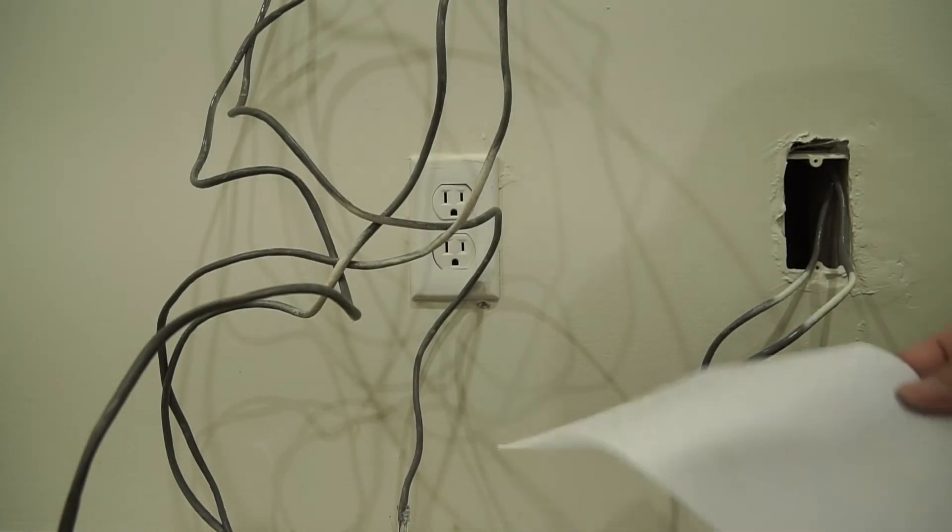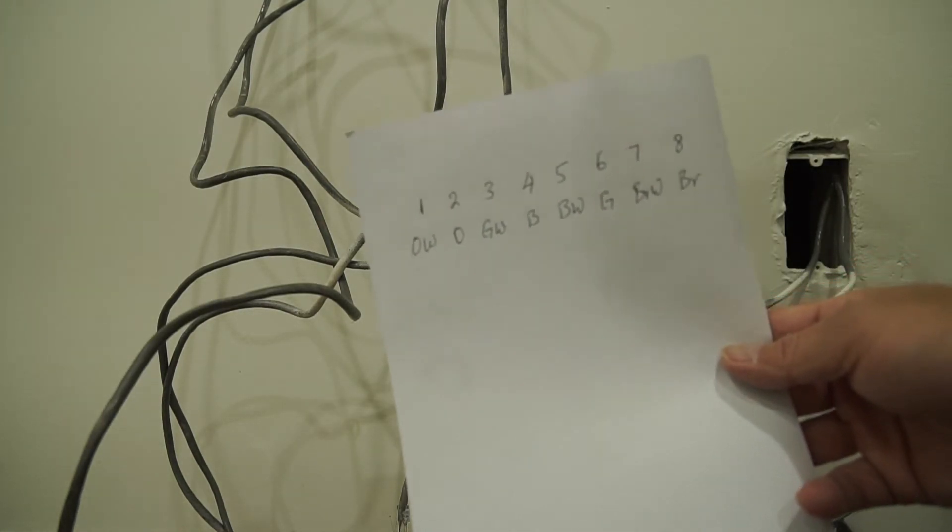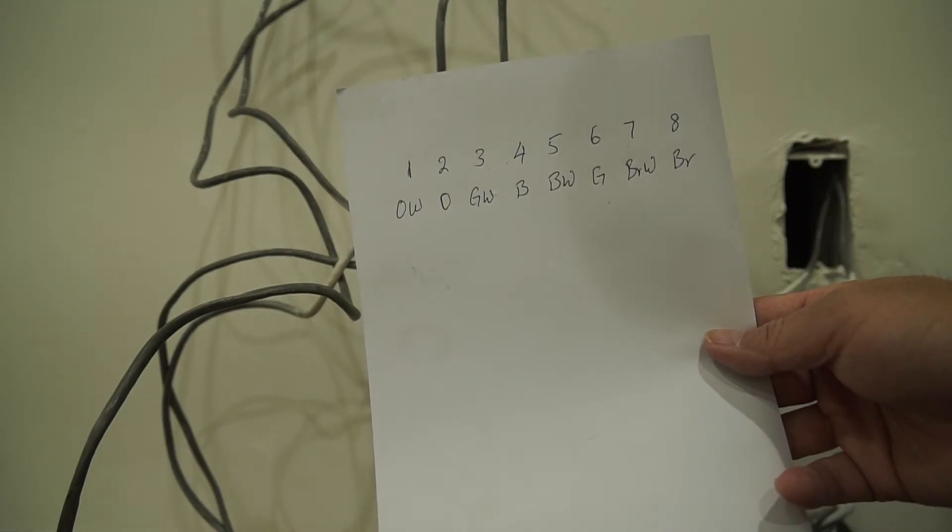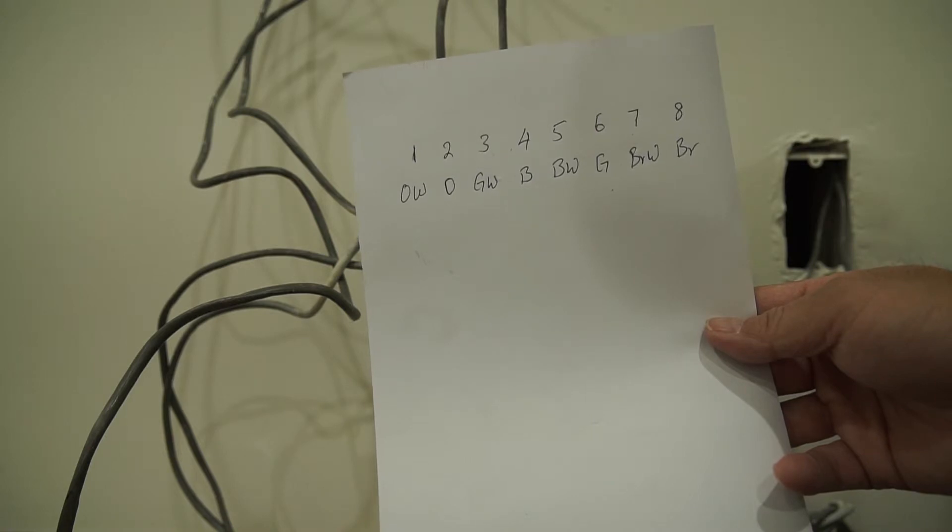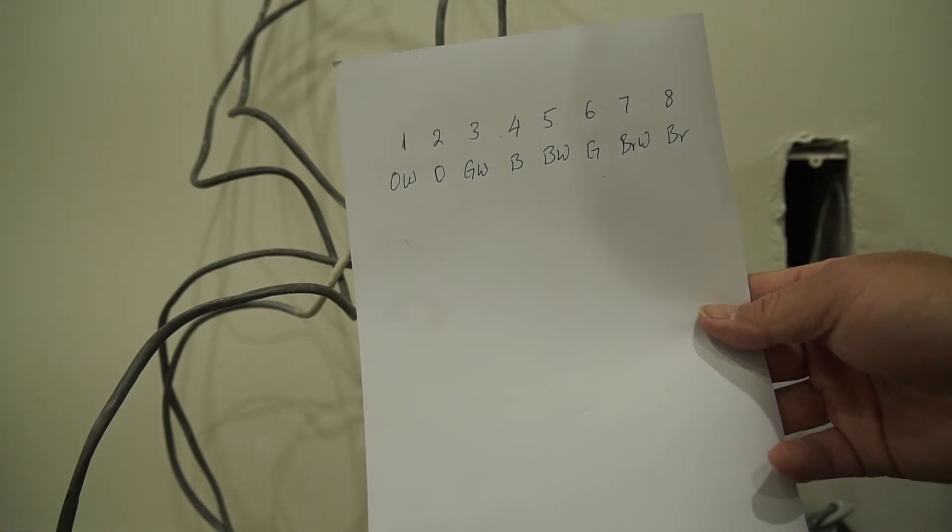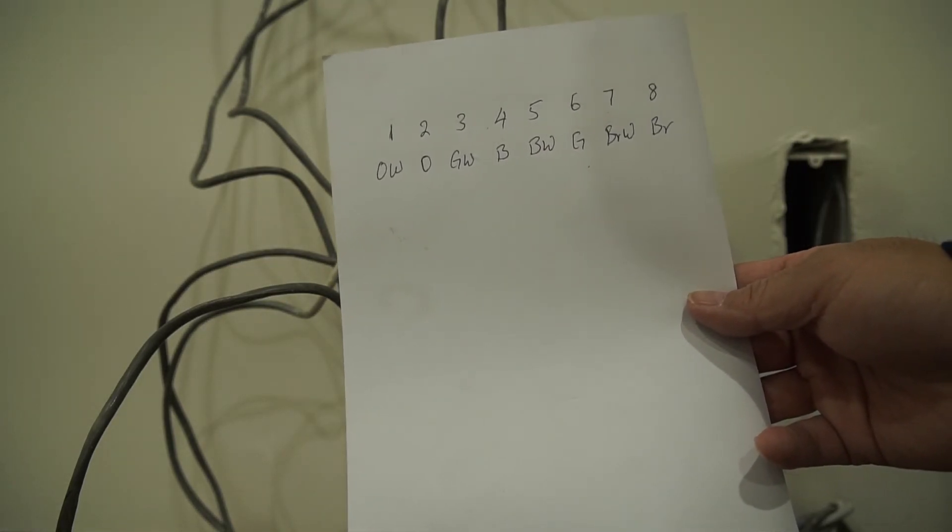So once that's done, I make sure I have this thing marked down correctly with one being orange white, two is orange, three is green white, four is blue, five is blue white, six is green.